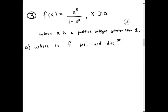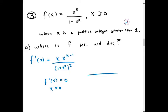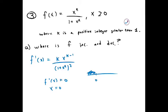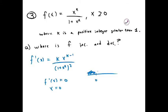First, we're going to find where f is increasing and decreasing. So we take the first derivative. You have to do the quotient rule. And once you do that, you get kx to the k minus 1 over 1 plus x to the k squared. And check where this is zero. And when you do that, it only happens when x is zero, which is the end of our interval.